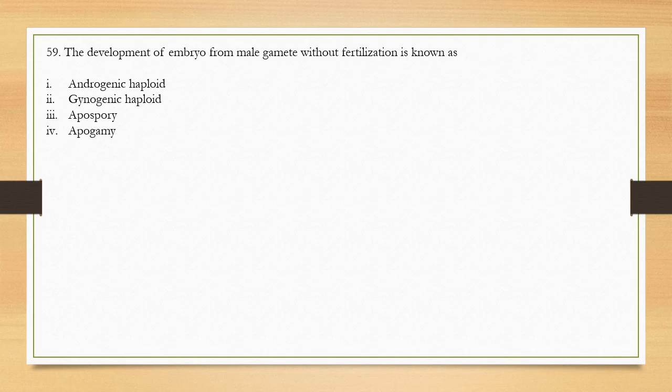Question number 59: The development of embryo from a male gamete without fertilization is known as — options are androgenic haploid, gynogenic haploid, apospory, and apogamy. The correct answer is option 1, androgenic haploid. 'Andro' refers to the male part, confirming that development from the male gamete without fertilization is called androgenic haploid.